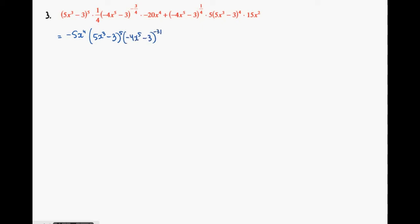As this is being simplified, you should notice both terms have common factors. There is a 5 that divides into both and x squared that is common. Then we have the bracket 5x cubed minus 3 appearing twice with different exponents, and the other bracket as well.